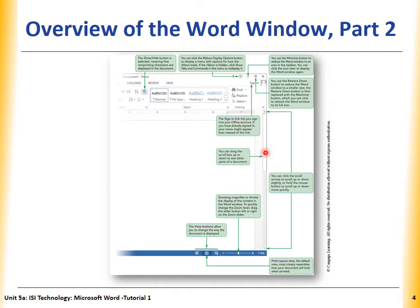Here is the scroll bar to go up and down. Here is the zooming magnifier to make the page bigger or smaller. And here are the View buttons that allow you to change the way the document is displayed. By default, the Print Layout view is selected — the middle one — by default.